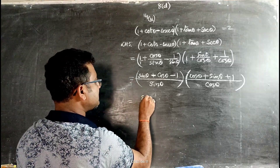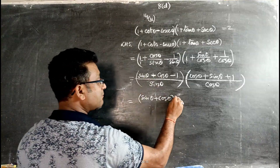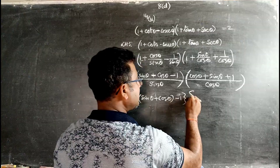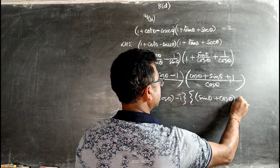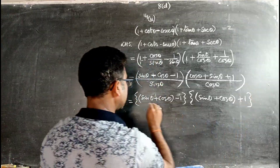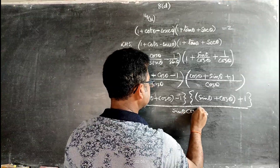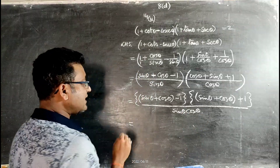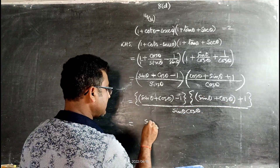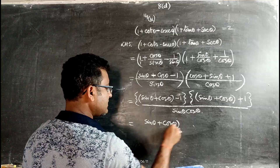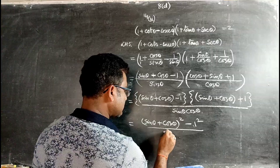We can group (sinθ + cosθ) as A. The numerator is (A - 1)(A + 1) = A² - 1, which is (sinθ + cosθ)² - 1, all divided by sinθ·cosθ.